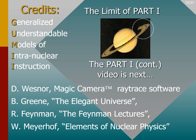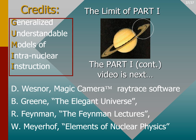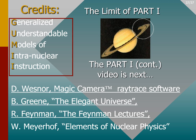And finally, in the credits section for part one, we see once again that GUMMI stands for Generalized Understandable Models of Intranuclear Instruction. The 3D computer models of the nucleus were made with Magic Camera Ray Trace software. Most of the knowledge and all of the references were garnered from the three authors listed.